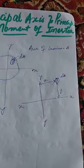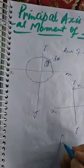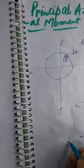The product of inertia of this plane area will be given by: I_xy = ∫ x·y·dA, which is the product of inertia as we have defined in our previous lectures.